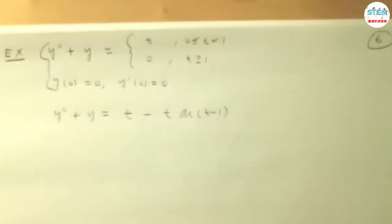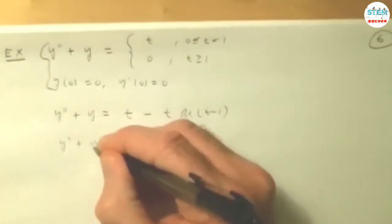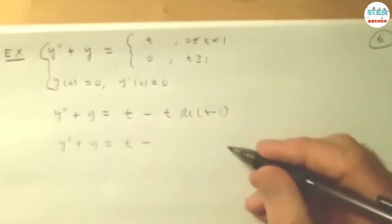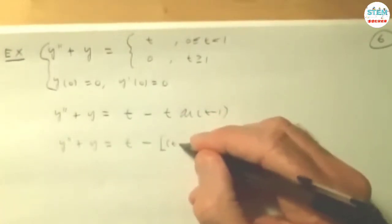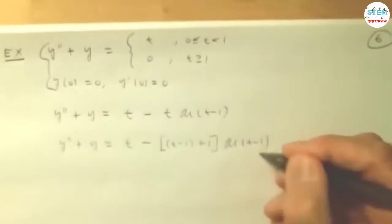Now we still cannot take a Laplace transform because this does not match this. This one you don't have to worry about, it's not a multiplier. This one you have to match the argument. So this is an easy thing to do. You have y double prime plus y equals t minus, and I'm going to add this step. I want t minus 1, and I'm going to have to add 1.